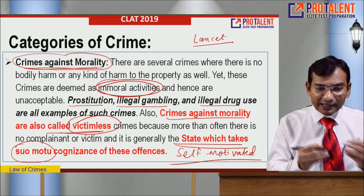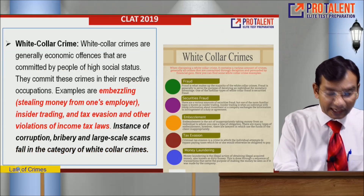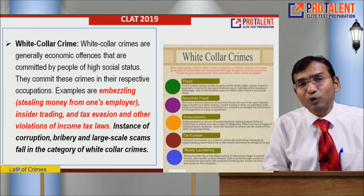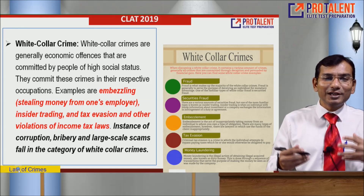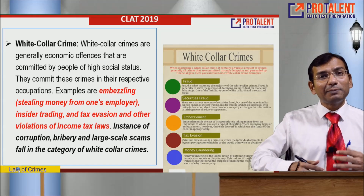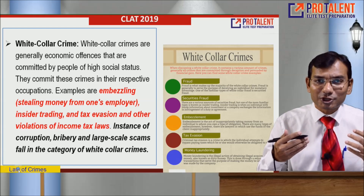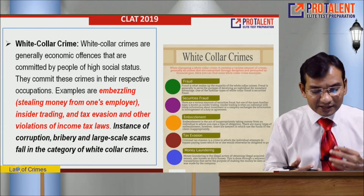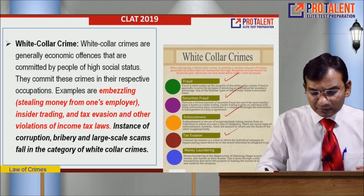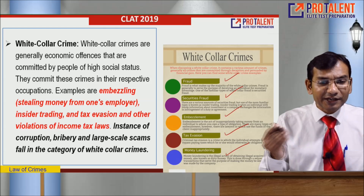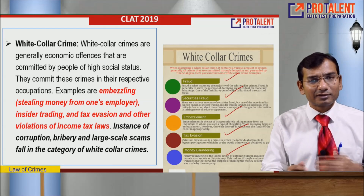The fourth category is white collar crime, which is interesting. White collar crimes are generally economic offenses committed by people holding very high positions, those with high social status, or those who are economically well-off. Examples include fraud, security fraud, embezzlement, tax evasion, and money laundering — hiding income and not paying taxes to the government is a crime. Embezzlement means stealing money from one's employer.